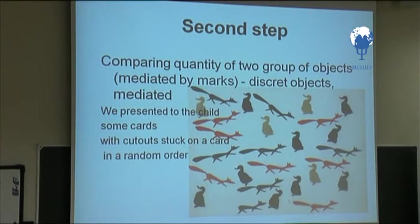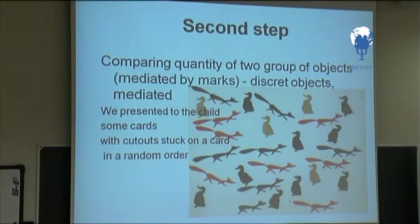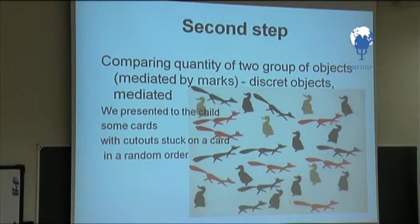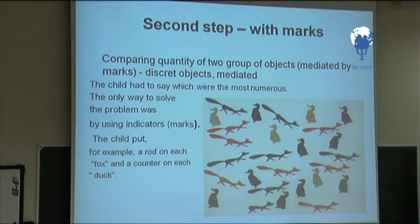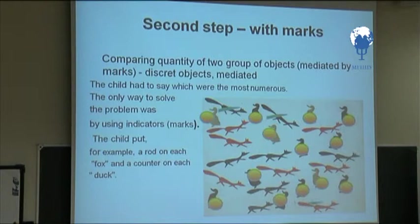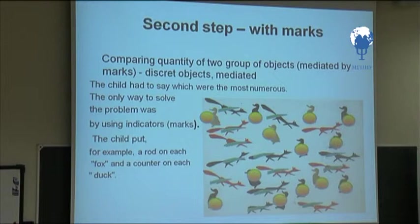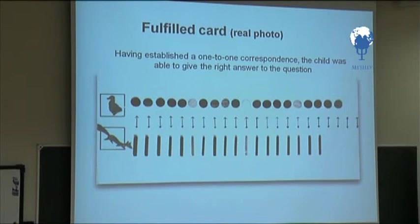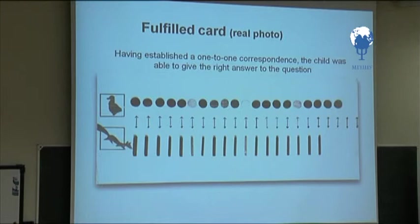Comparing quantity of two groups of objects mediated by marks — discrete objects mediated. We presented the child with some cards with cutouts stuck on a card in random order. The child put, for example, a rod on each fox and a counter on each duck. Having established one-to-one correspondence, the child was able to give the right answer to the question.